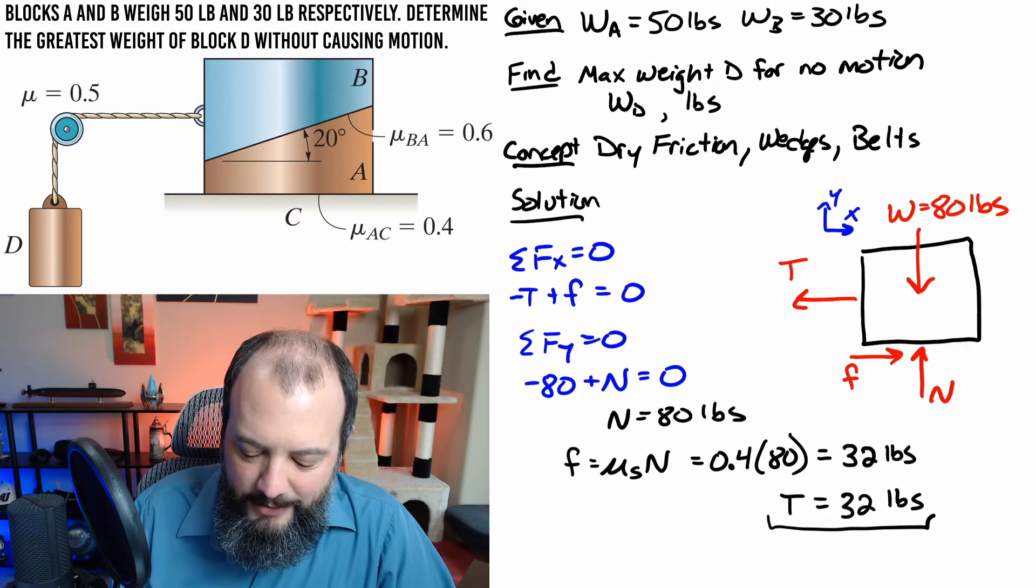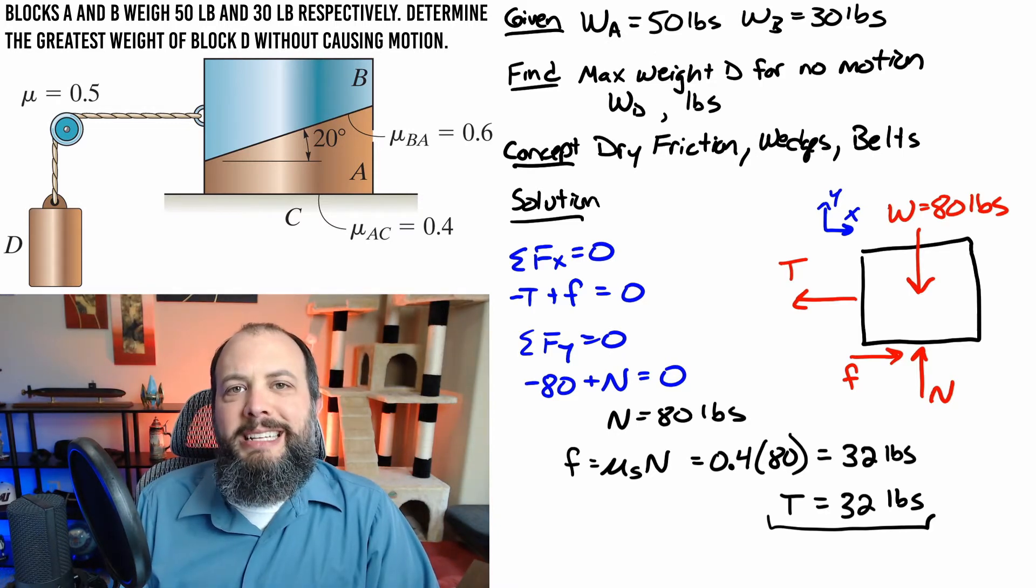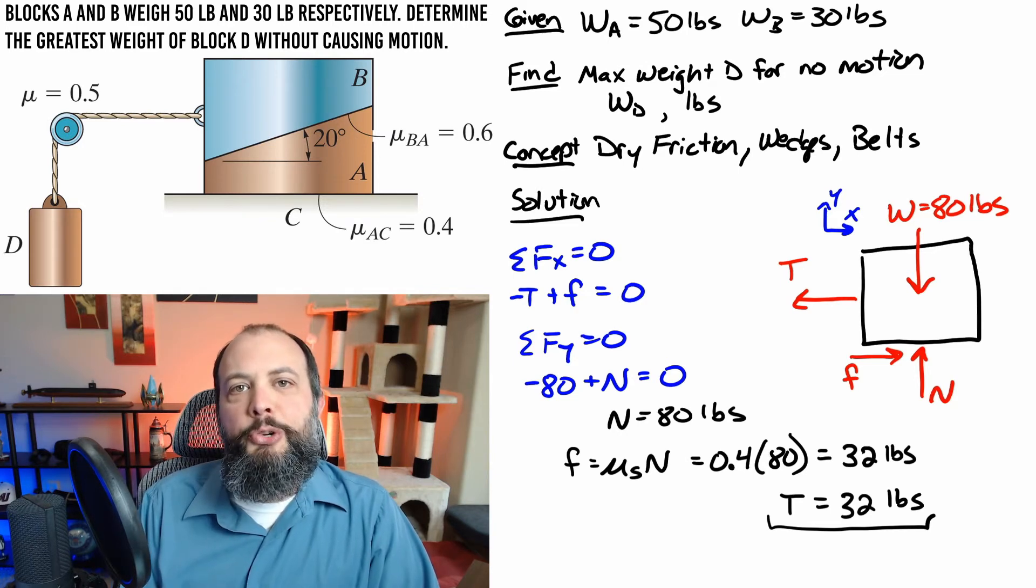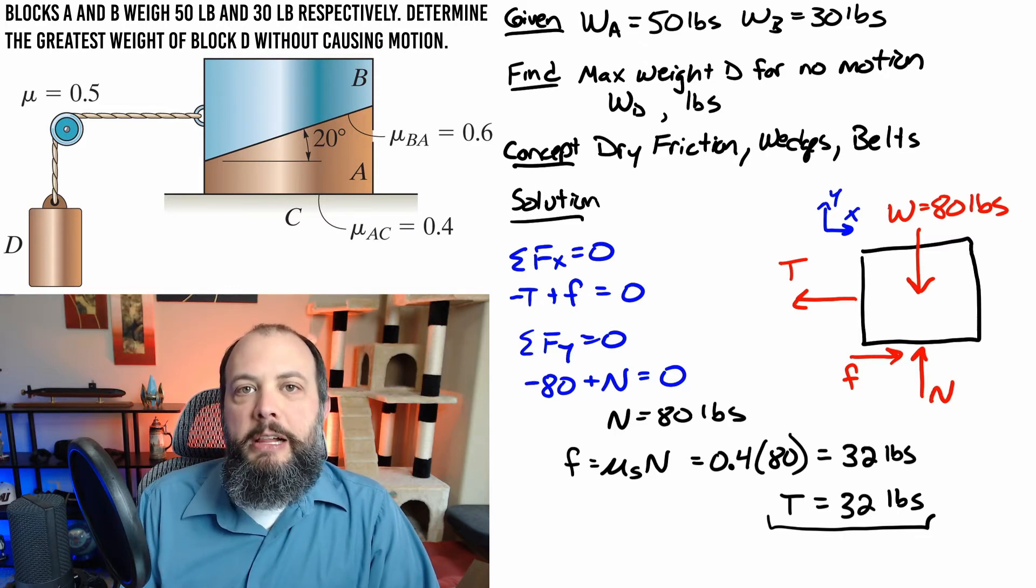So 0.4 times 80 giving a tension in the cable of 32 pounds. And it's important to keep in mind this tension is not the weight of the block. At the end of this problem we'll have to do a belt friction equation around that round peg so the weight would end up being a larger value than the tension that we find here. As a quick aside if you think this video is helping you out please take a second to hit the like button below the screen. It really does show YouTube that this is valuable content.